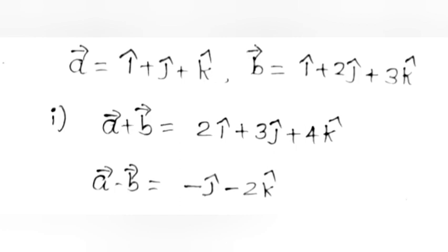Problem 13. Given vector A = i + j + k and vector B = i + 2j + 3k. Part 1: Find A + B and A − B. Answer: A + B = 2i + 3j + 4k. A − B = −j − 2k.